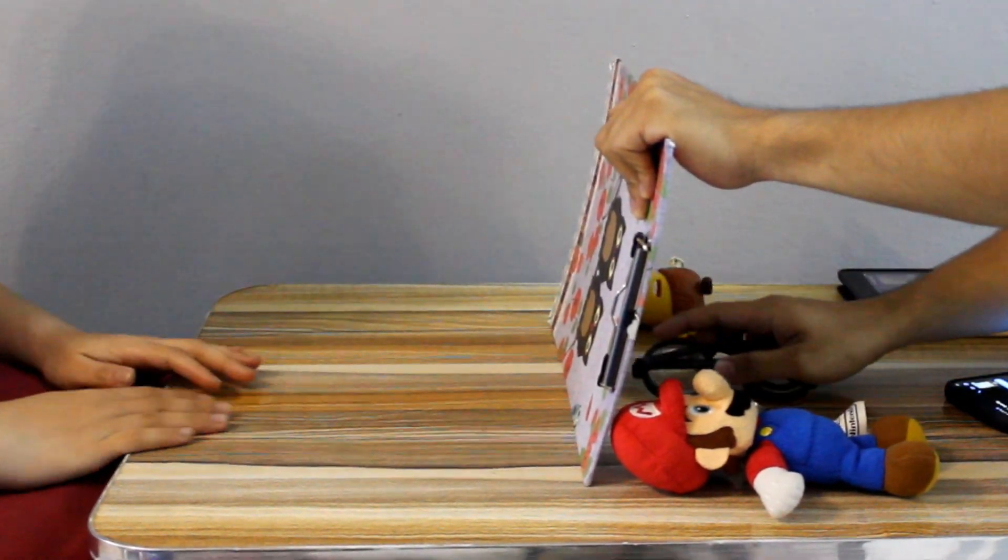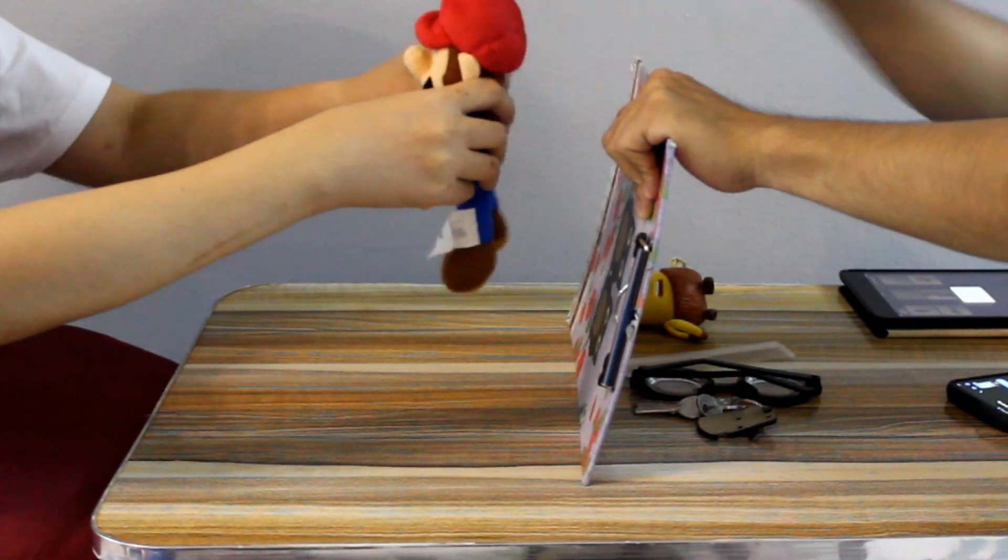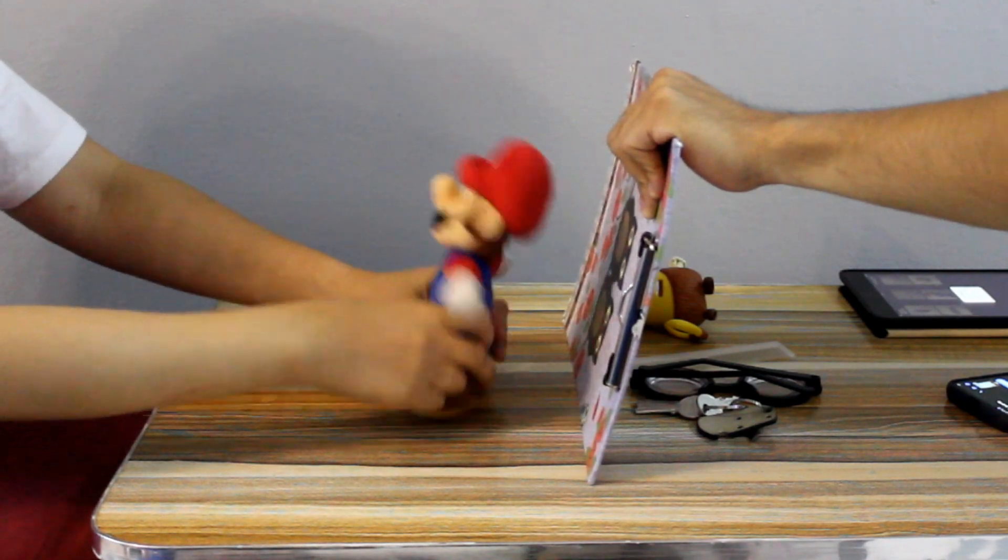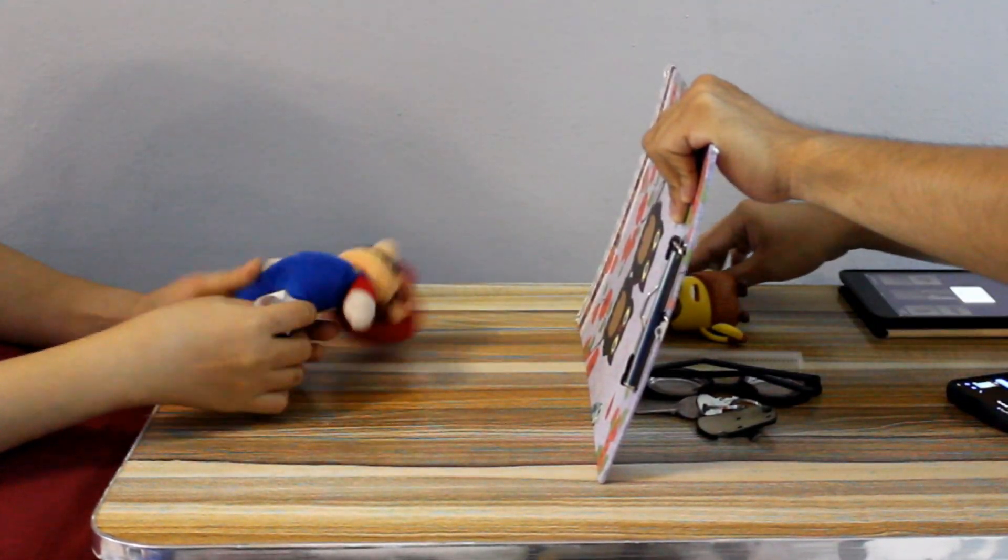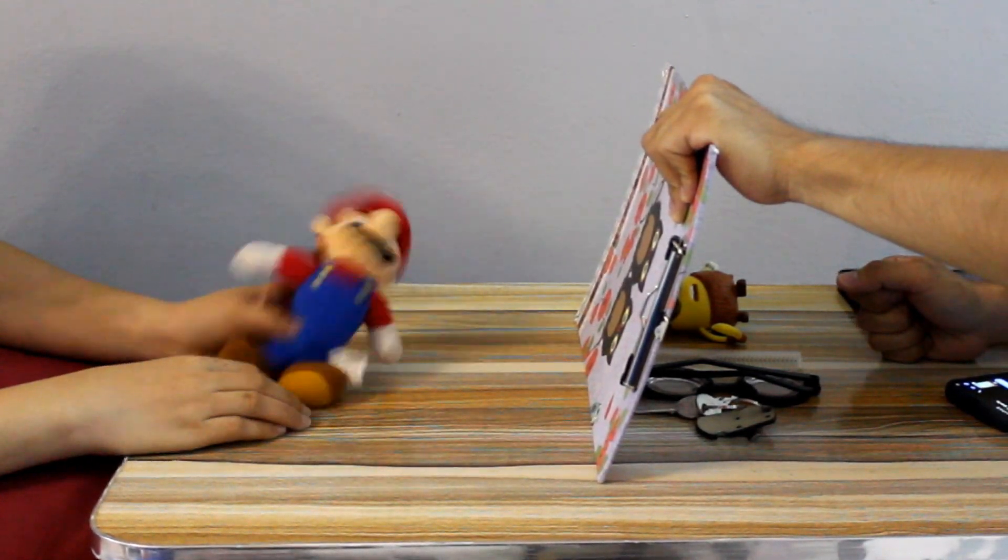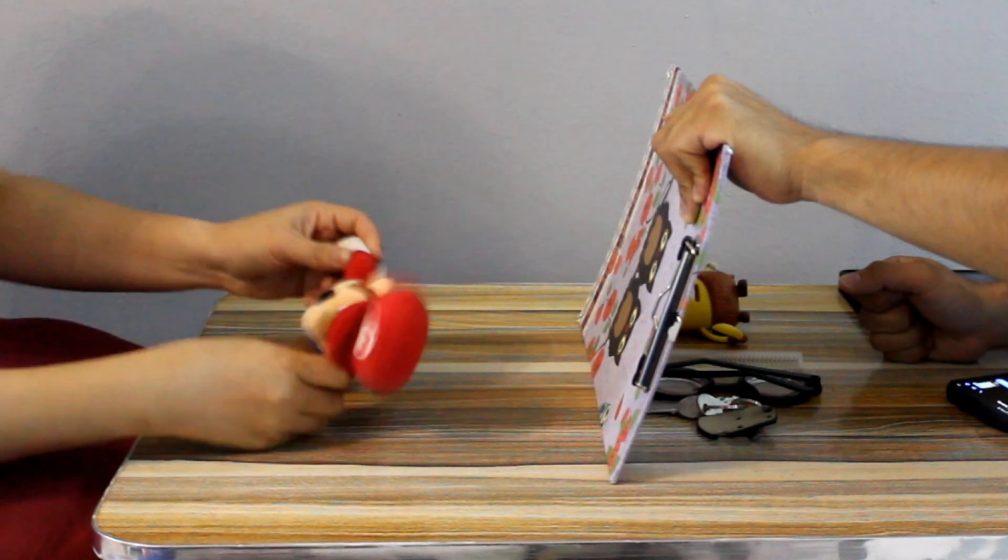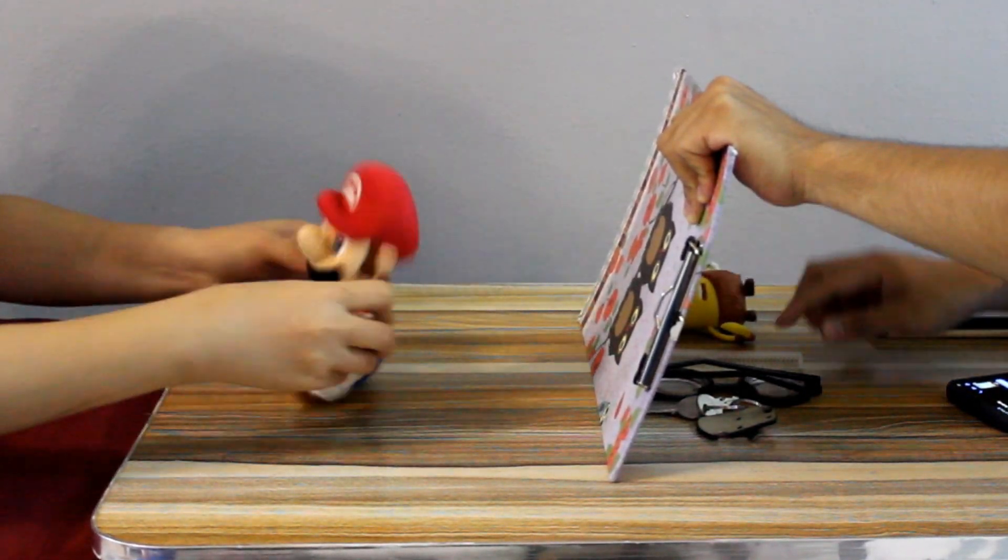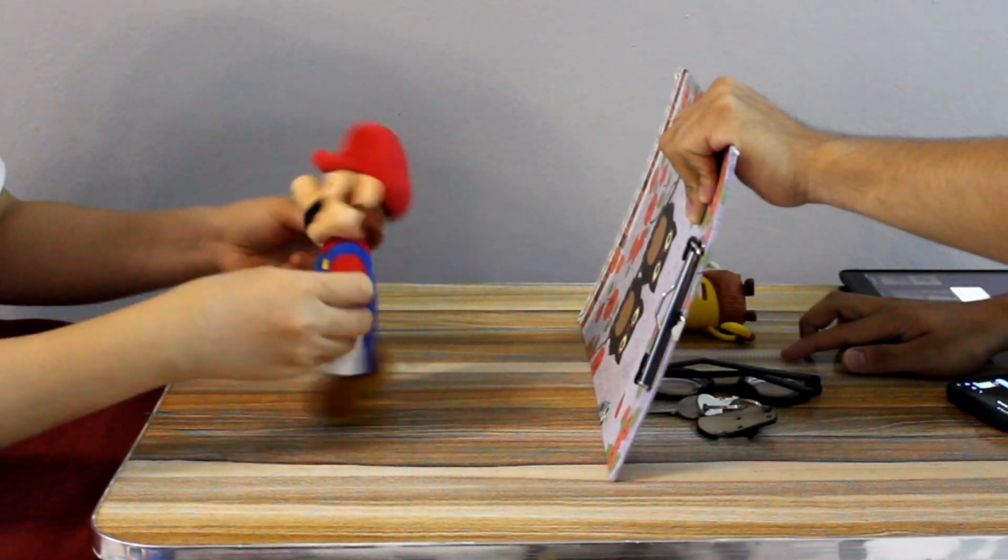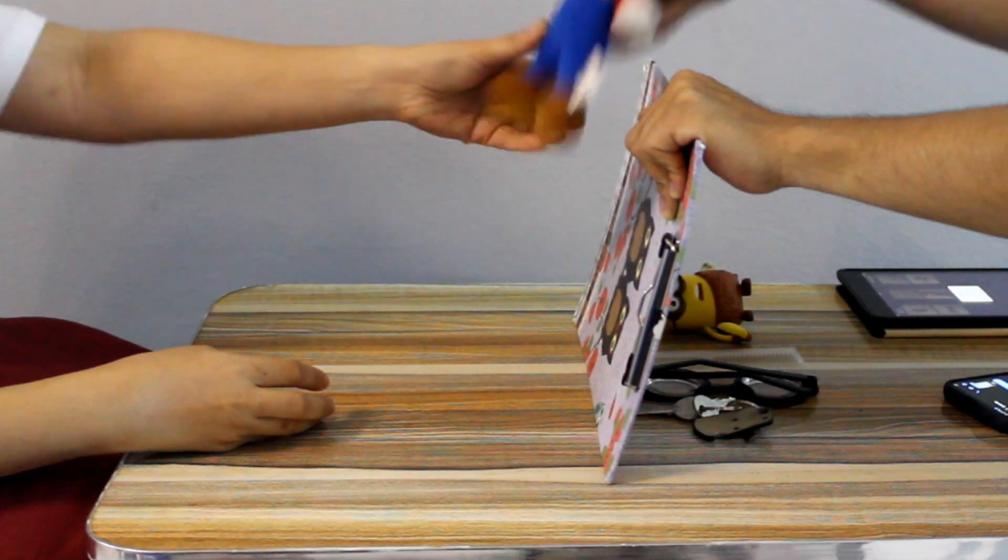Good job. Look what I have. Super Mario. It's fluffy and soft, right? What is he doing? Are you making him dance? Oh, he's dancing. What a cool dance. My turn. Thank you.